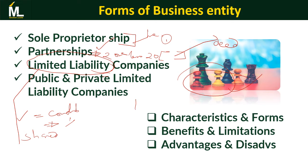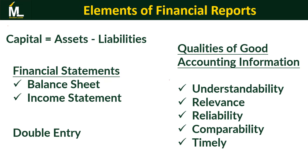We need to look in detail at the characteristics and forms of each business entity — sole proprietorship with one person, two to twenty for partnerships, and limited liability companies listed on stock exchanges. Notes are provided on the website for those who have enrolled. We also need to look at the benefits, limitations, advantages, and disadvantages of each business entity.